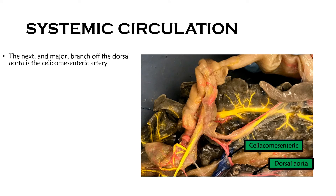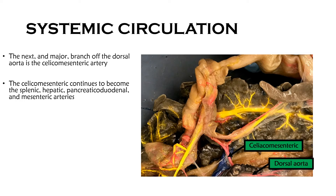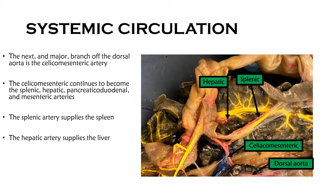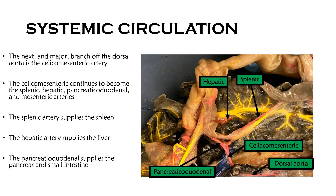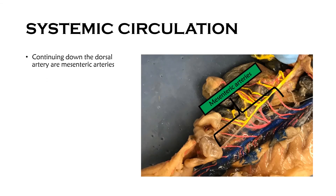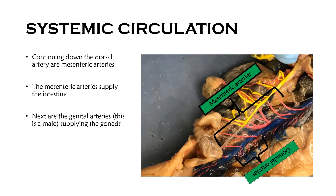The next major branch is the celiac mesenteric, which continues to become the splenic, hepatic, pancreatic duodenal, and mesenteric arteries. The splenic artery supplies the spleen, the hepatic artery supplies the liver, and the pancreatic duodenal artery supplies both the pancreas and the small intestine. Continuing down the dorsal aorta are the mesenteric arteries, which supply the small intestine — when in doubt, mesenteric arteries are supplying the small intestine.